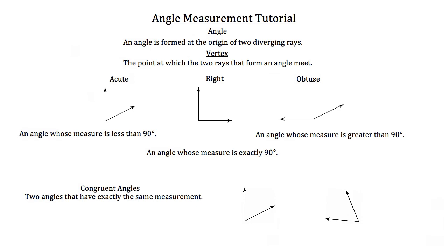The next thing we want to talk about is the angle bisector. An angle bisector is a ray that cuts an angle into two angles of equal measure.